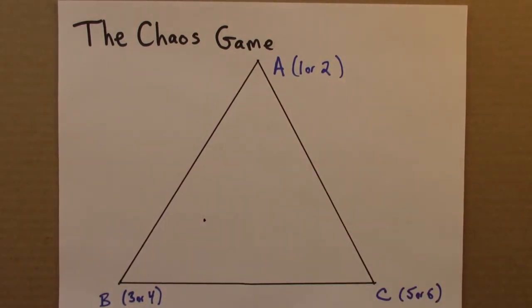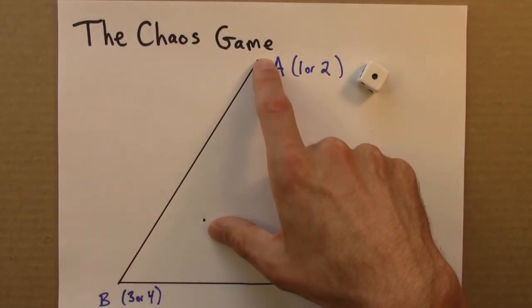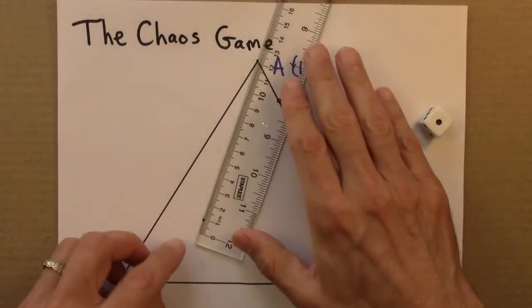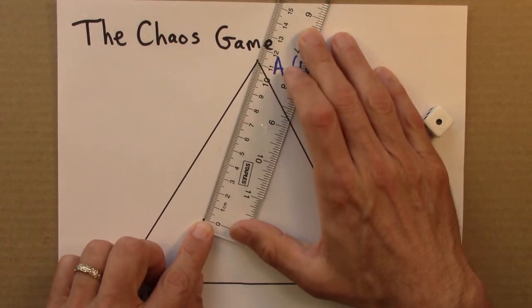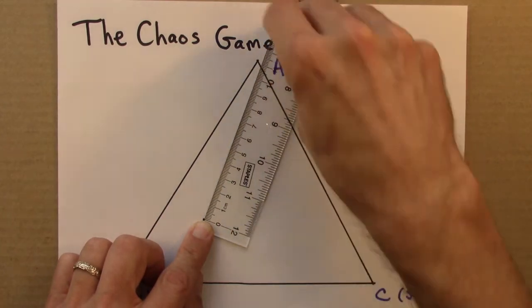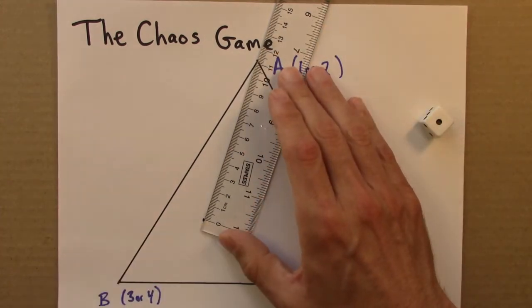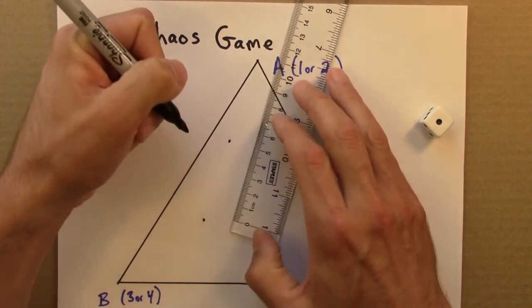And then, let's roll the die. Try that again, see if I can keep it on. Alright, so I've got a 1. So what I'm going to do is I'm going to move from here to there, but only go halfway. Alright, so let's see here. I've got a ruler. From here to the corner is about 11, where my thumb is. So I'm going to go 5 and a half. There. So that's the next point.